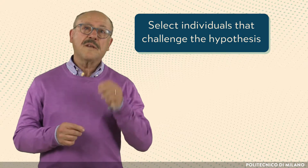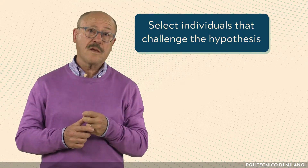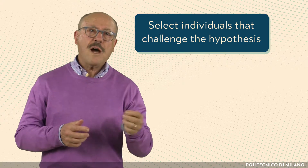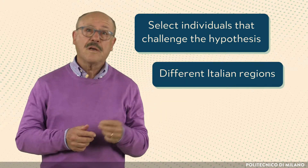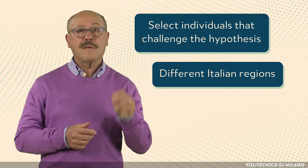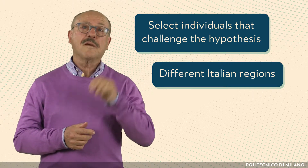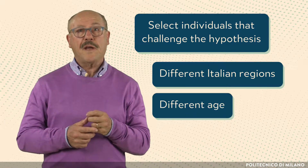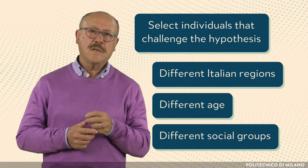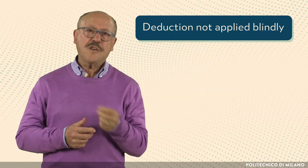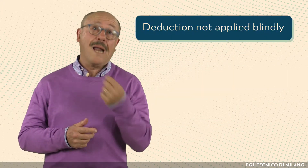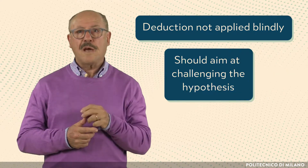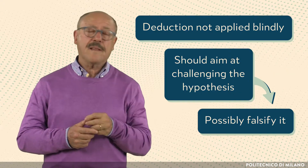In designing such experiments, we should do our best to select individuals that are likely to challenge our hypothesis. For example, we should try with individuals from different Italian regions, to make sure that the hypothesis equally applies across all of them. We may also try with people of different age, different social groups, etc. In other terms, deduction should not be applied blindly, but should aim at challenging the hypothesis and possibly falsifying it.